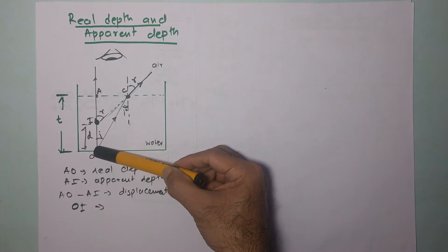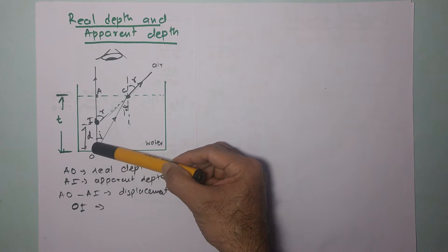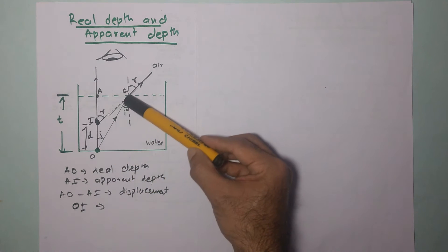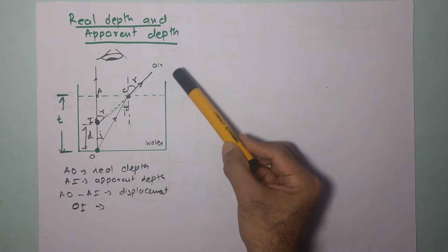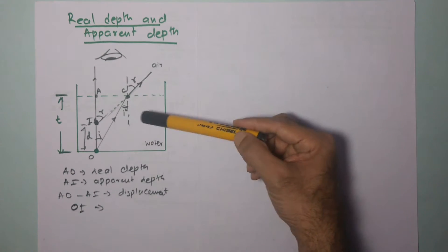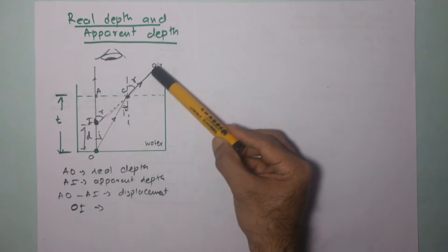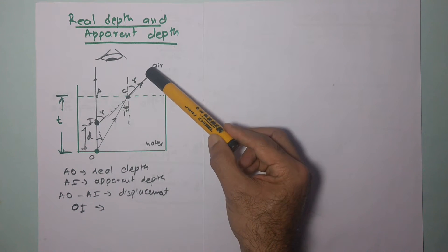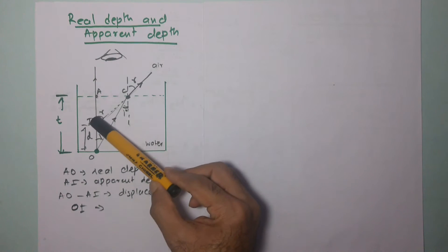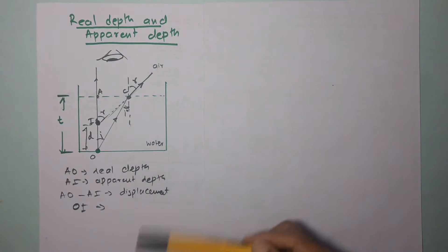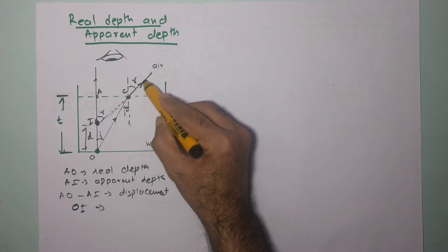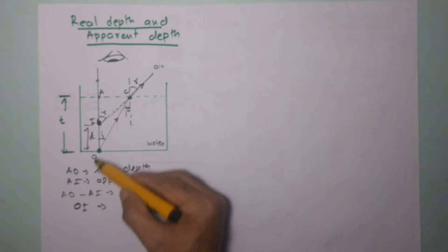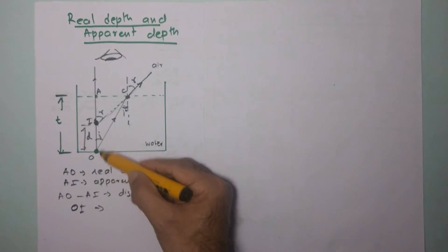When the person looks at this object, a ray of light coming out straight perpendicular to the interface will go straight, undeviated, without refraction. Another ray going at an angle will get deviated — it bends away from the normal because it is traveling from a denser medium to a rarer medium. This ray enters the eye, and the eye traces it back in a straight line, which is where the image is formed — raised above the actual object position.